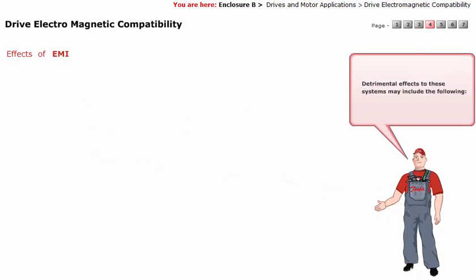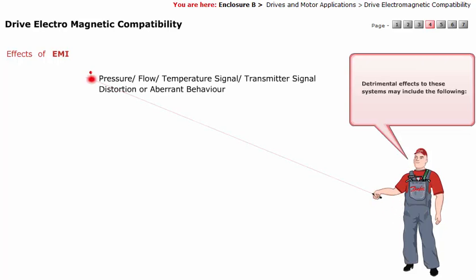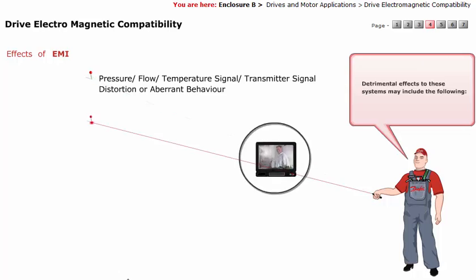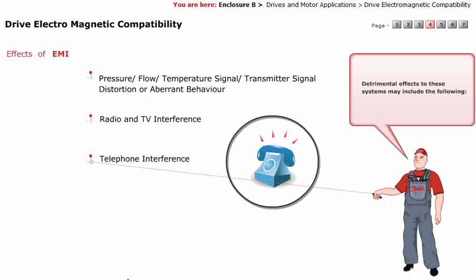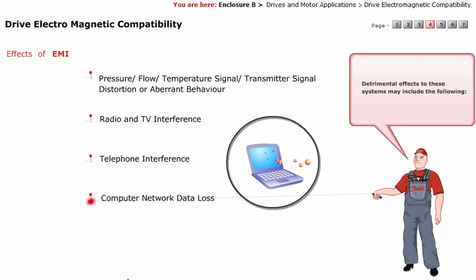Detrimental effects to other systems may include the following: pressure, flow, and temperature signal transmitter signal distortion or erratic behavior; radio and TV interference; telephone interference; computer network data loss; and digital control system faults.